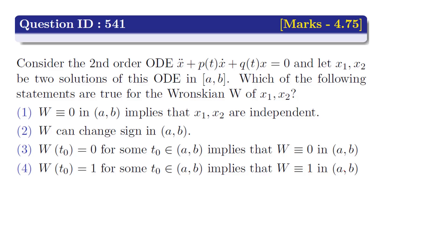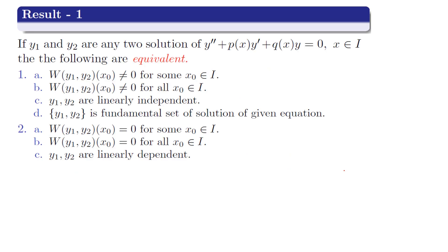For this, we have to remember the following results. Result number 1: if y1 and y2 are two solutions of the differential equation y'' + P(x)y' + Q(x)y = 0, where x belongs to interval I, then the following are equivalent. Point a: Wronskian W(y1, y2) at x0 is not equal to 0 for some x0 in I; Wronskian W(y1, y2) at x0 is not equal to 0 for all x0 in I; y1, y2 are linearly independent; y1, y2 is a fundamental set of solutions of the given equation.